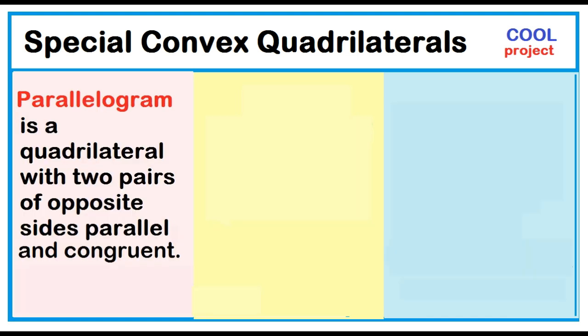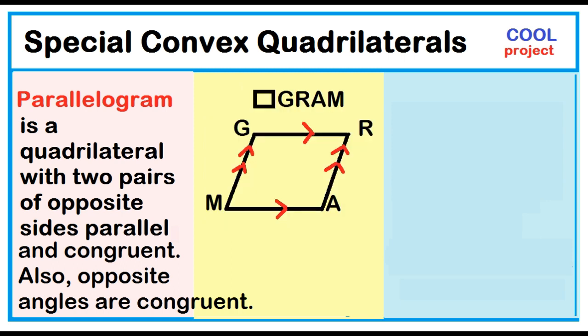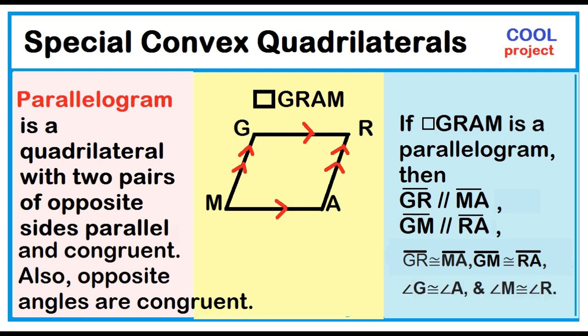A parallelogram is a quadrilateral with two pairs of opposite sides parallel and congruent. Also, opposite angles are congruent. Quadrilateral GRAM has two pairs of opposite sides parallel. If quadrilateral GRAM is a parallelogram, then segment GR is parallel to segment MA, segment GM is parallel to segment RA, segment GR is congruent to segment MA, segment GM is congruent to segment RA, angle G is congruent to angle A, and angle M is congruent to angle R.